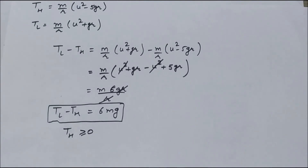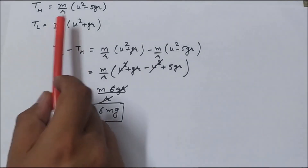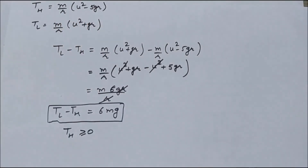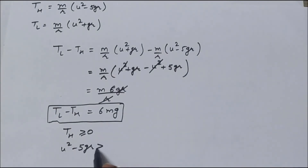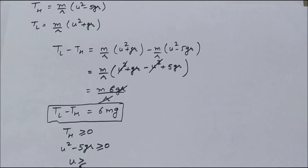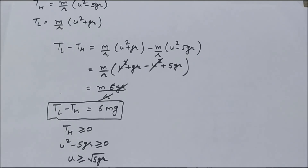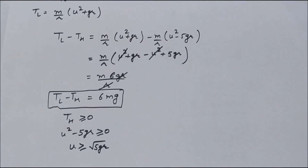The value of T_H is m upon r times (u² minus 5gr), so u² minus 5gr must be greater than or equal to 0. This automatically gives u greater than or equal to root 5gr. This is how we evaluate the minimum value of u.